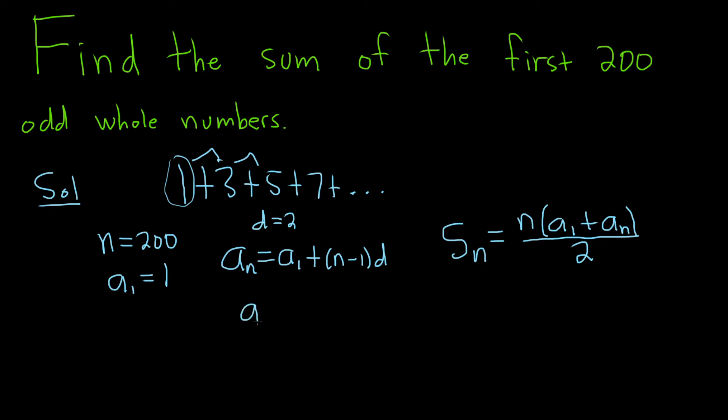So if we plug everything in, let's plug in the 200. Then a1 is 1 plus, and then n is 200 minus 1, and then d is 2. This would be a sub 200 equals 1 plus 199 times 2. And I'm just going to put this in my calculator just to be really safe, 199 times 2 plus 1. So I got 399.